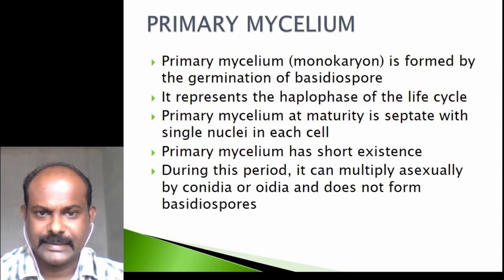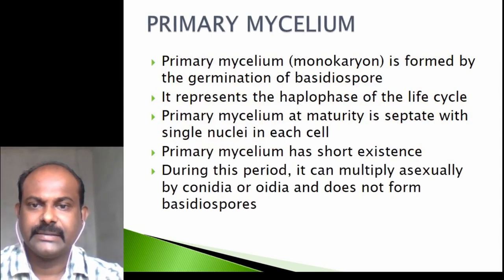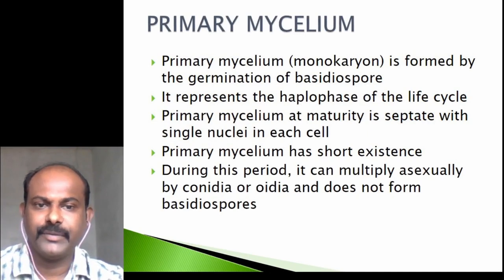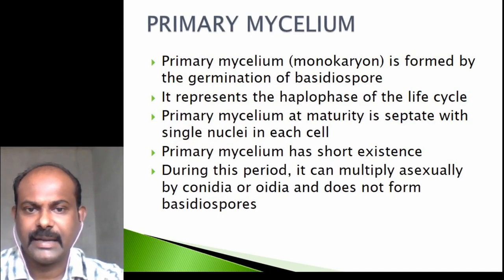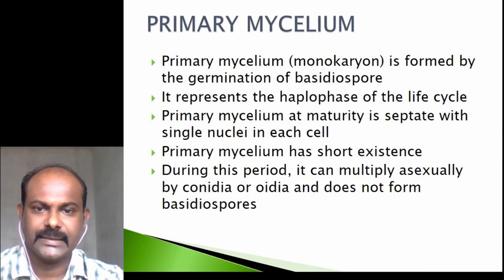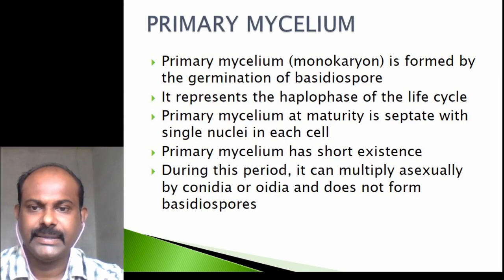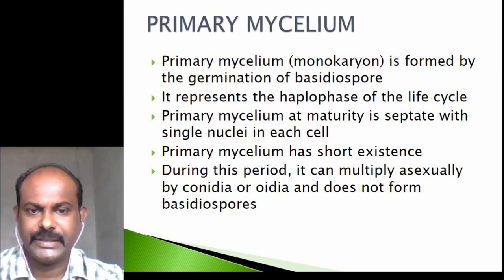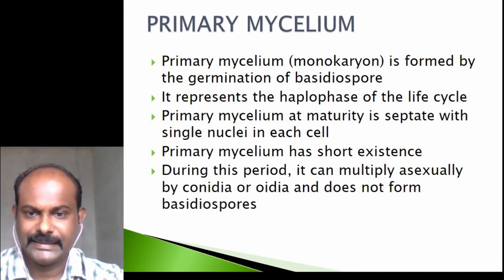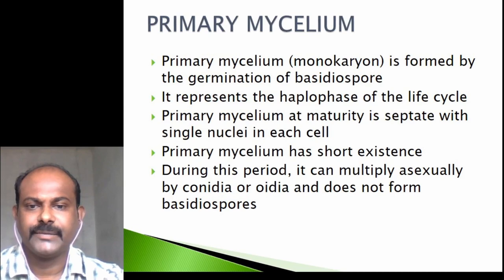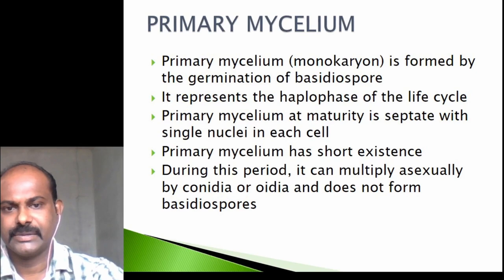The primary mycelium is monokaryotic and is formed by the germination of a basidiospore. It represents the haplophase of the life cycle. At maturity, the primary mycelium is septate with single nuclei in each cell. It is of very short existence; during this period it can multiply asexually by means of conidia or oidia, and does not form basidiospores.